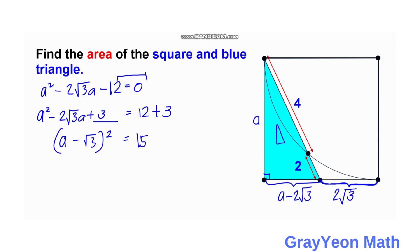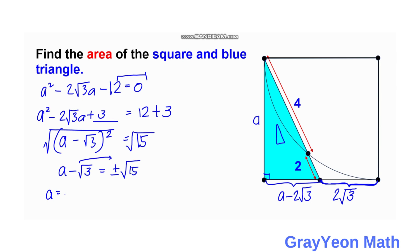Taking the square root of both sides: (a − √3)² = 15, so a − √3 = ±√15. Therefore a = √3 ± √15. We can write √15 as √5 × √3, and factor out √3 to get a = √3(1 ± √5).